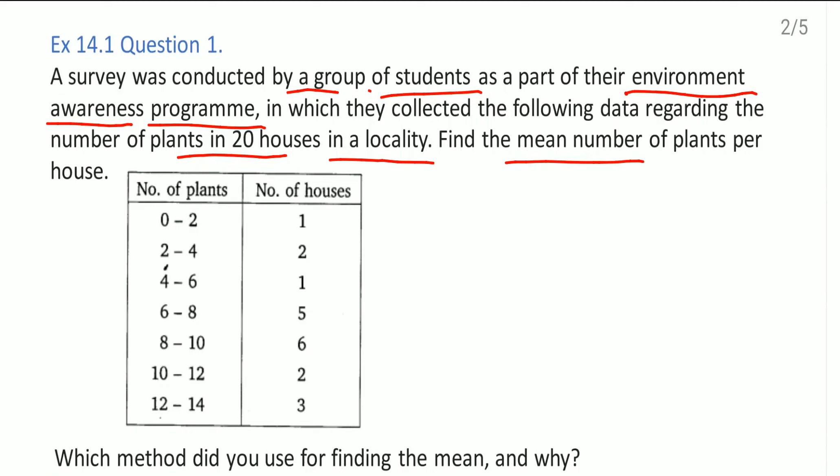The data is like this: number of plants in the first column and number of houses in the second column. One more question they are asking is which method did you use for finding the mean and why?